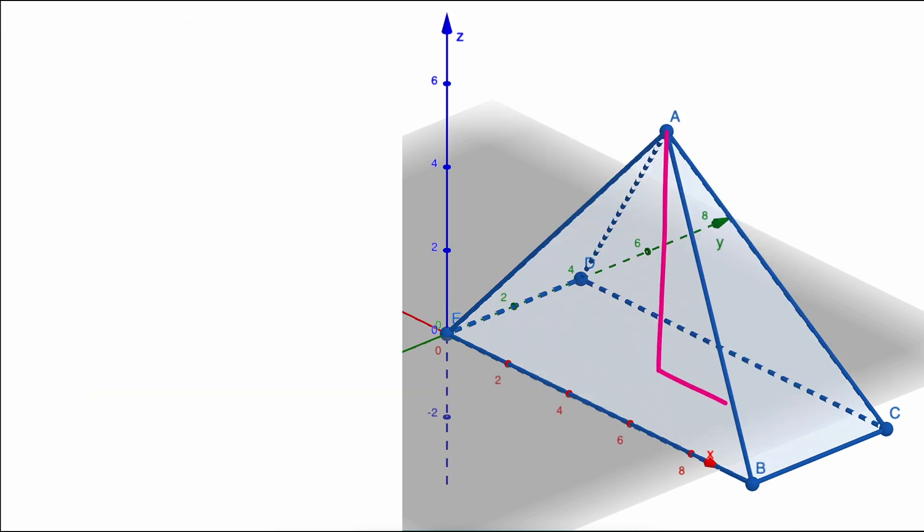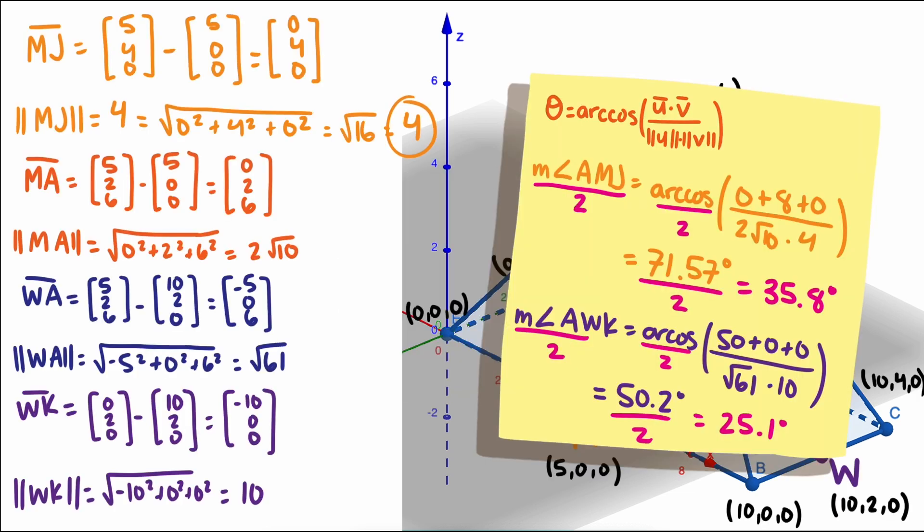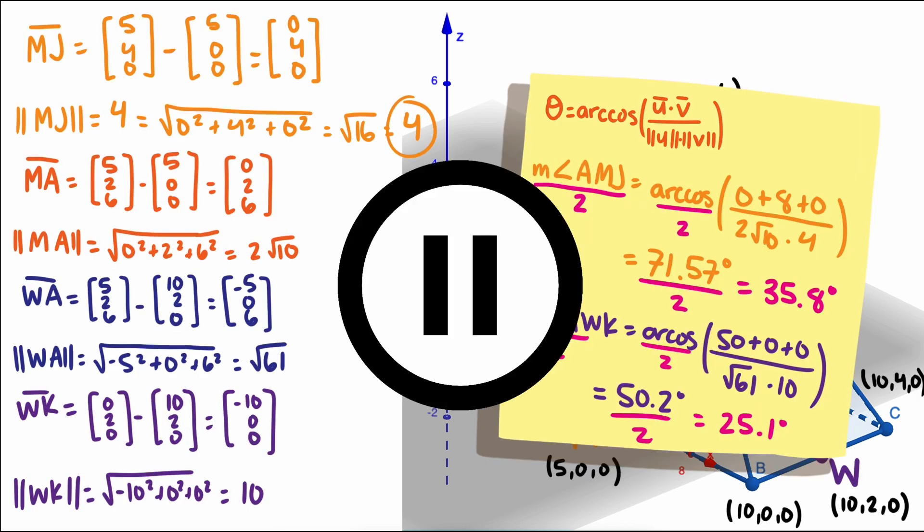These two angles can also be easily found with trigonometry, by dropping a segment from the apex to the base, making some triangles, calculating lengths, and then using arc cosine. If you need to look any of this over before we move on to the harder angle, pause the video here.